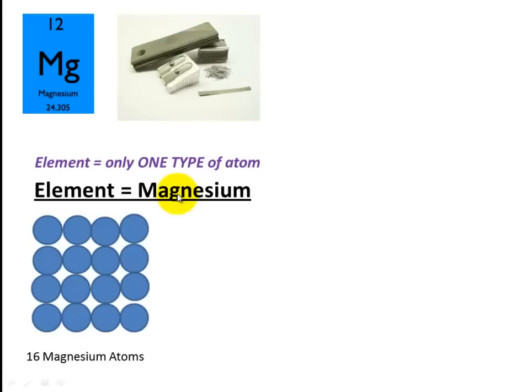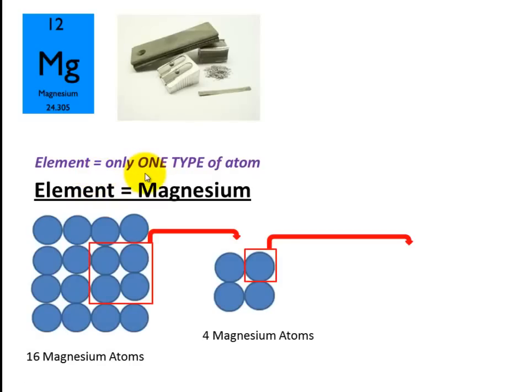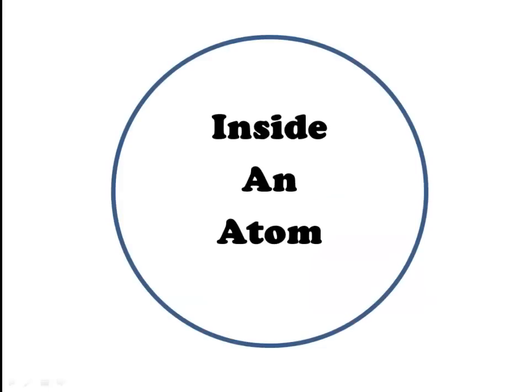It looks like this with lots of atoms next to each other. And remember an element is just one type of atom. If we cut that down into the smallest possible building block we get one atom. The atom is the smallest building block. Everything is made up of atoms.